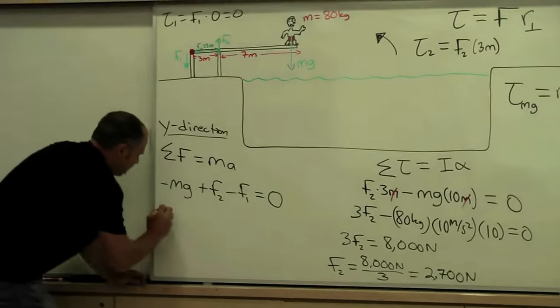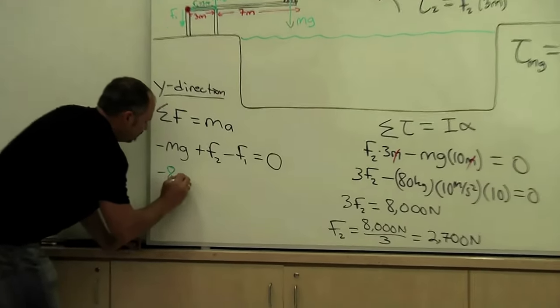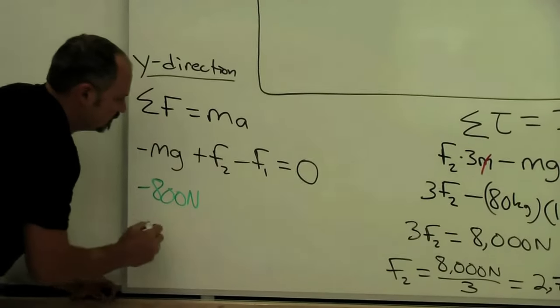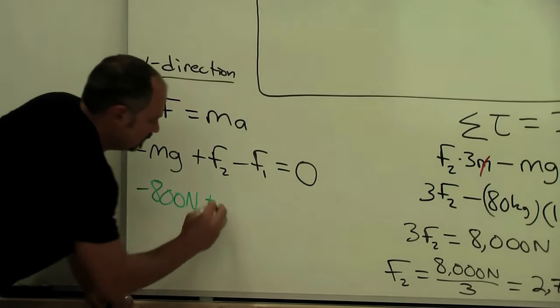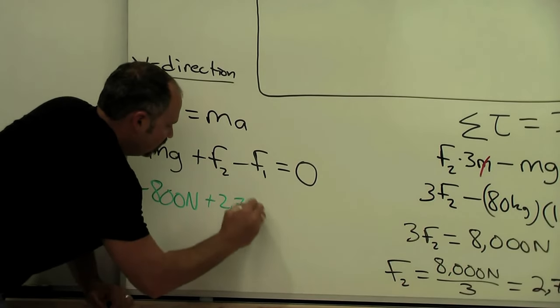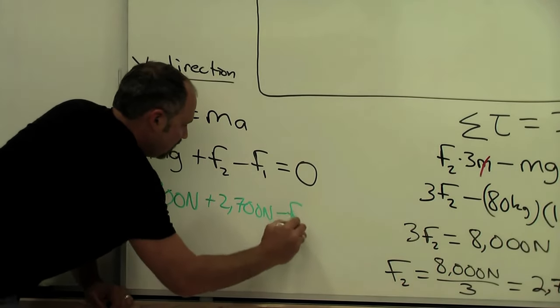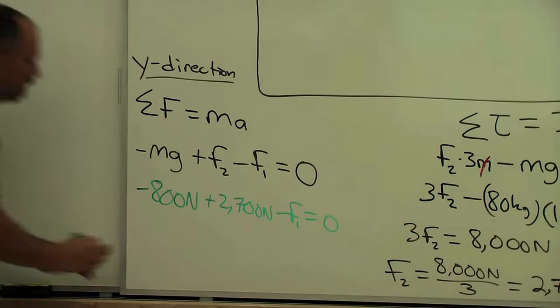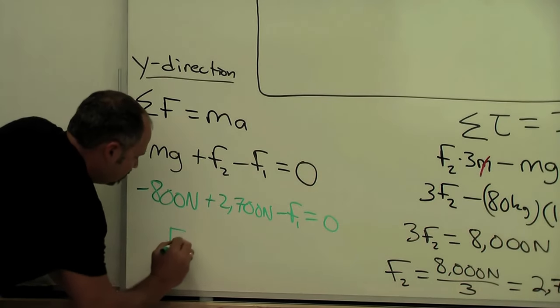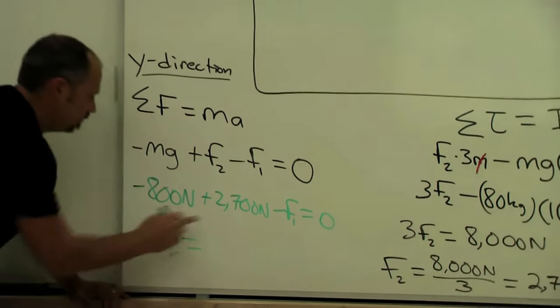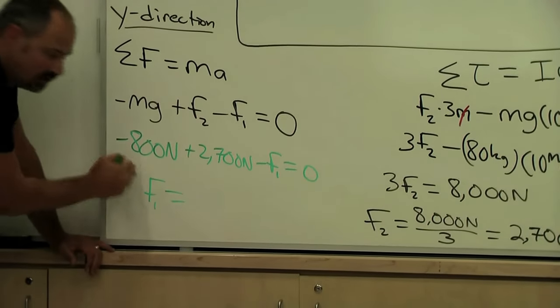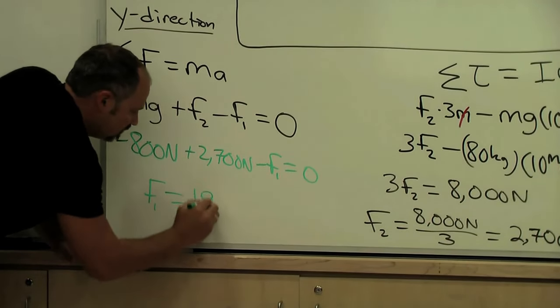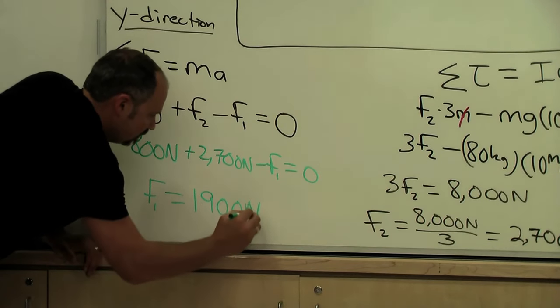So we have 800 newtons plus the 2700 newtons minus F1 equals zero. And therefore F1 has to equal the 2700 minus the 800 which is 1900 newtons.